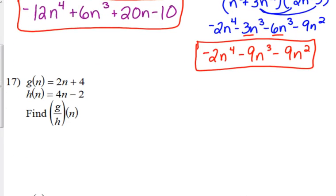Number 17 is the division problem. Literally all we're going to do is we're going to put the g of n function over the h of n function. g of n is 2n plus 4, h of n is 4n minus 2. What type of function did we just create? Rational.